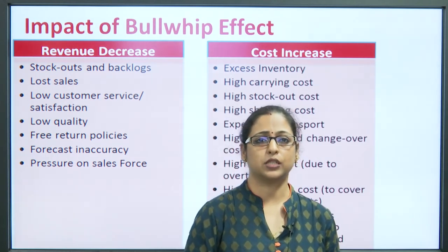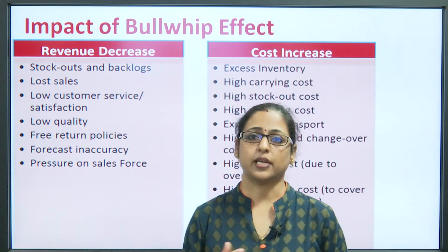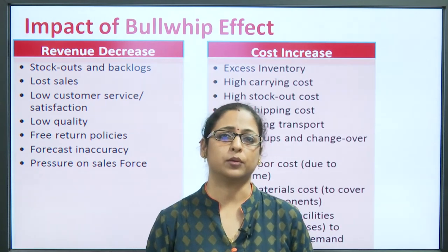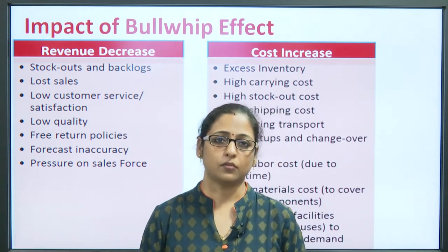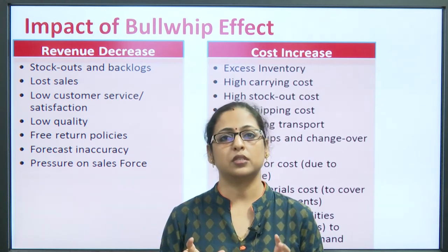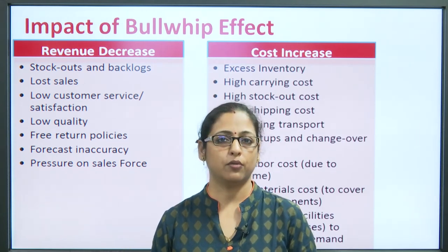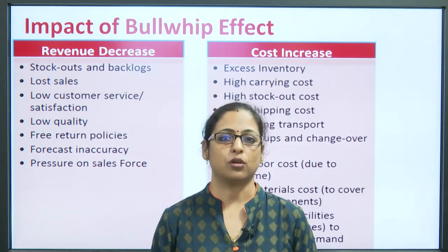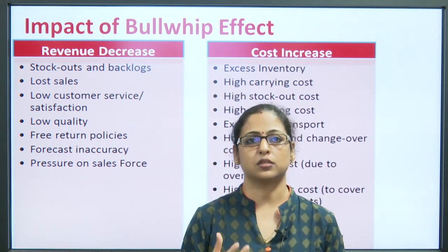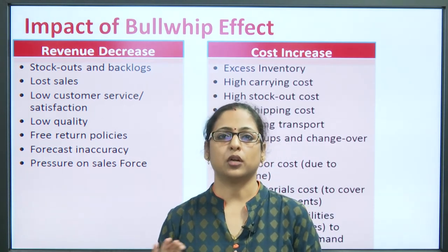Pressure on the sales force is another impact. If bullwhip effect arises and a company has already produced 60 units when actual demand was only 10 units, there is a variation of 50 extra units. The company will push these back towards the customer, and sales people will be under pressure to sell the 50 extra units of buffer stock that were created because of wrong forecasting, promotions, free return policies, or other reasons.